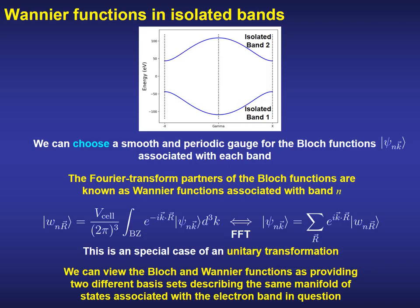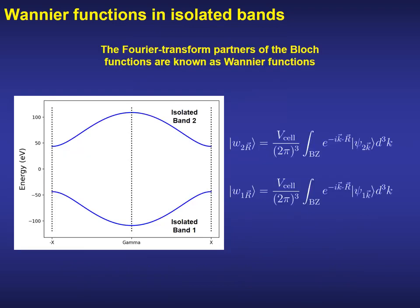From a mathematical point of view, the Fourier transform is a special case of unitary transformation. Therefore, we can view the Bloch and Wannier functions as providing two different basis sets describing the same manifold of states associated with the electron band in question. In our simple example, if we have two isolated bands, each of them will generate a given Wannier function where the Fourier transform has to be performed on the Bloch functions describing a given band.